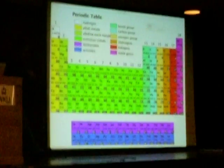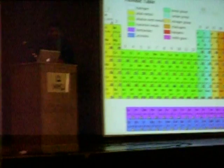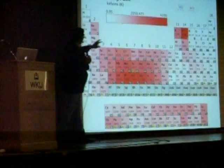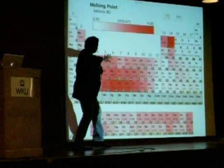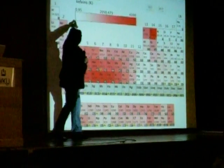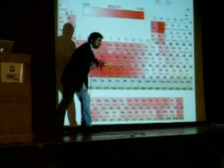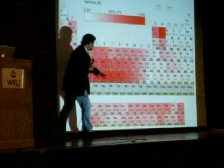For example, I can color-code these elements by density. Check this out. Let's see what you get. I did melting point — let's do it by melting point. The red is very high melting point, and down in white is a very low melting point. And look, we have this region of elements here, clustered together that have extremely high melting points.